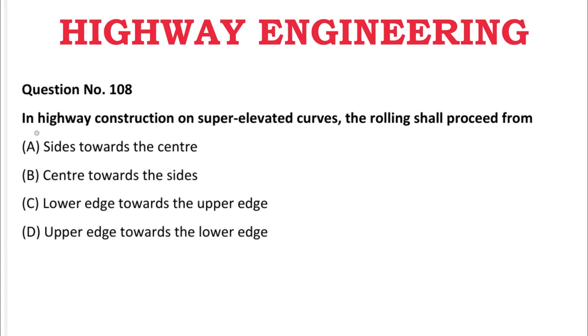Next question: In highway construction on super-elevated curves, the rolling shall proceed from — A: side towards the center, B: center towards the sides, C: lower edge towards the upper edge. The correct answer is C, lower edge towards the upper edge.